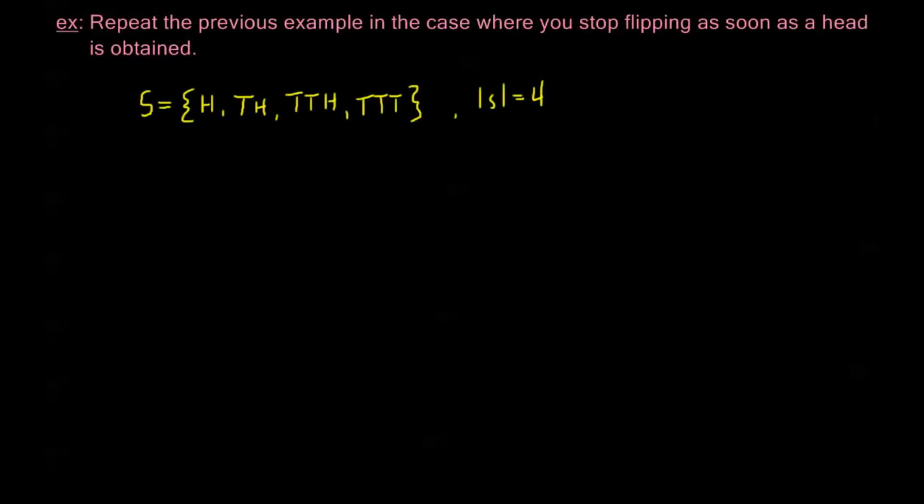Let's take a look at our other example that we did. When we repeated the previous example, we stopped flipping as soon as a head was obtained. So looking at my tree diagram here, the first flip can result in a heads or a tails.